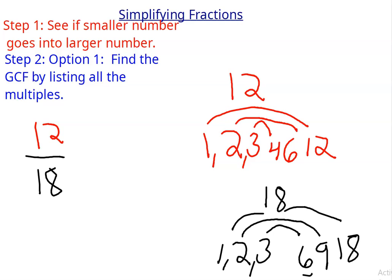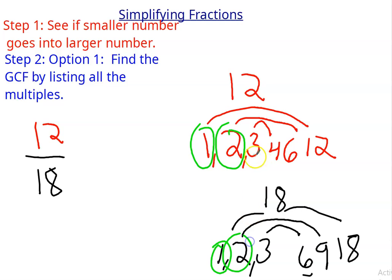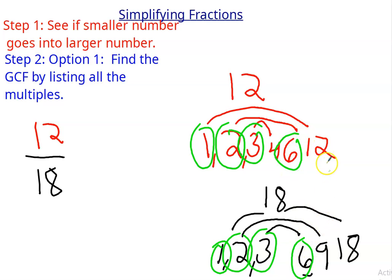So now I'm going to find my common factors. Is there a 1 at the bottom? Yes. So I'll circle 1. Is there a 2? Yes. So I'll circle 2. Is there a 3? Yes — I'll circle 3. Is there a 4? No. Is there a 6? Yes, so I'll circle 6. Is there a 12? No. So now I know I'm done.